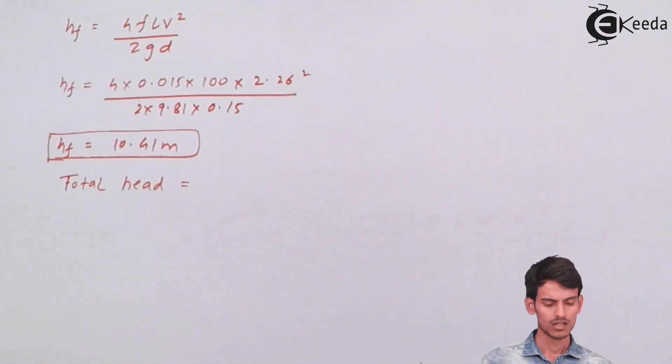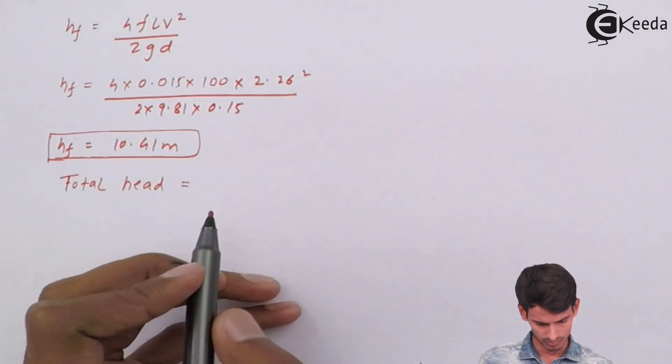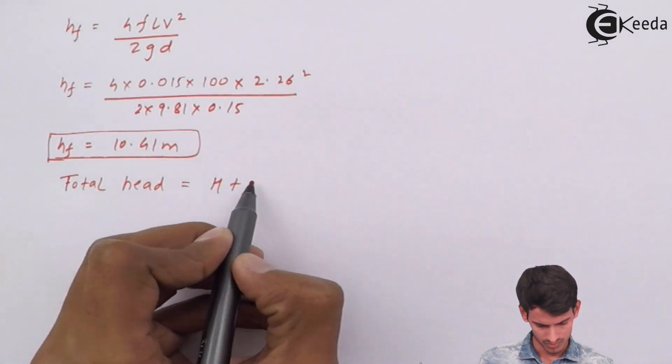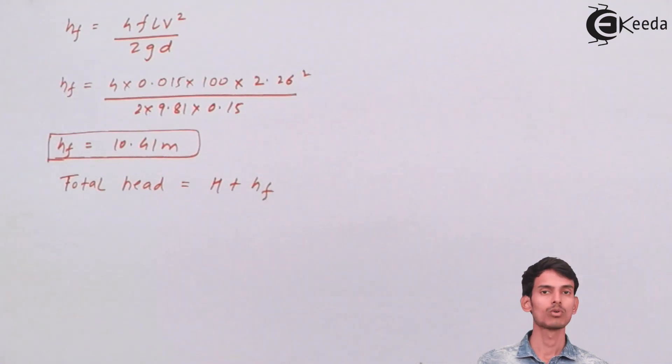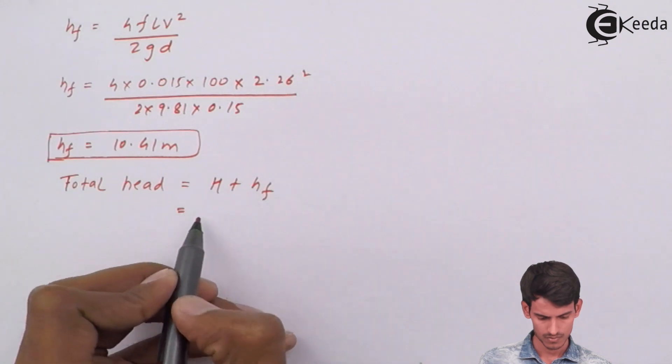Total head is nothing but what the impeller has to overcome - this friction head as well as the head that is given to you. So the impeller has to overcome both: the friction head as well as the given head. This is the total head that is obtained.